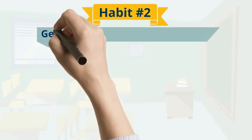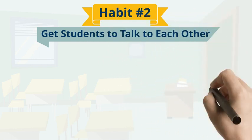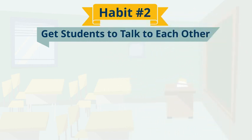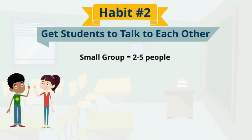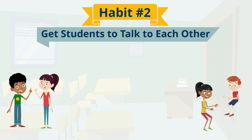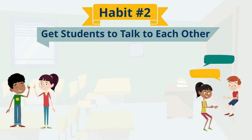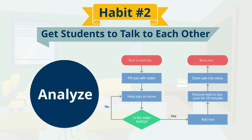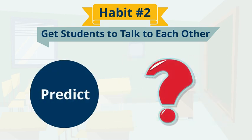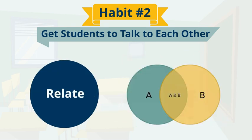The second habit of good discussion leaders is to get students to talk to each other. They often use small group activities that help students practice critical thinking together in a safe social space. For example, student groups can analyze a case, predict an outcome, articulate a hypothesis, or relate concepts to their own lives.